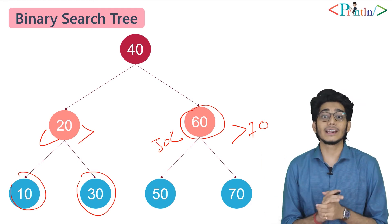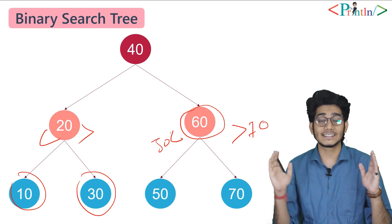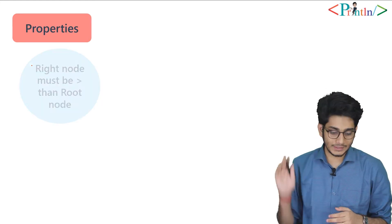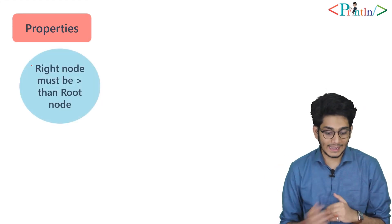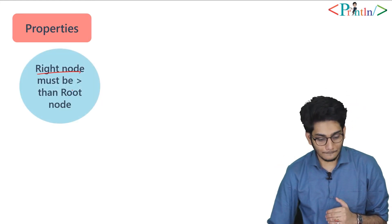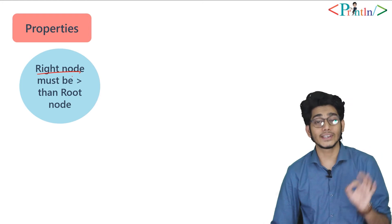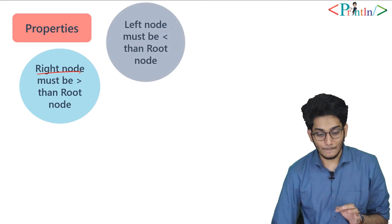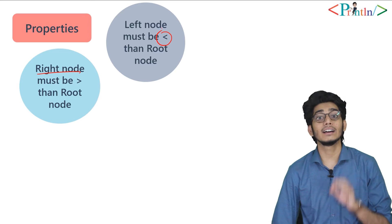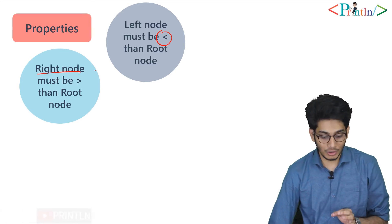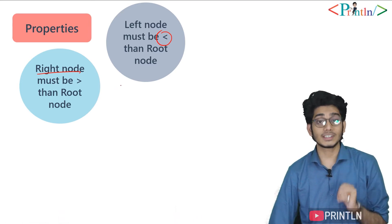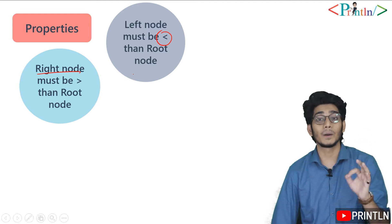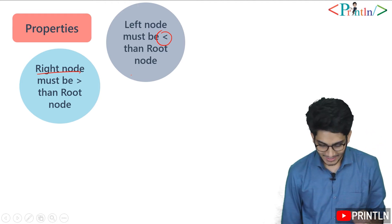Now we'll look at the properties of the binary search tree. The first property is that the right node must be greater than the root node, and the left node must be less than the root node. These are the most important properties of BST.